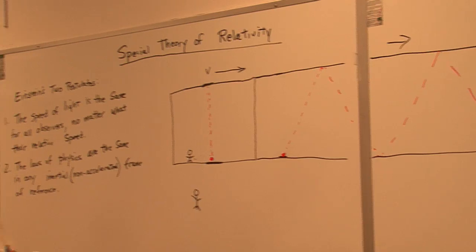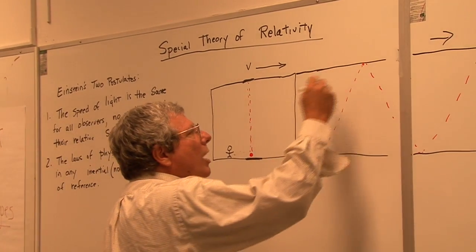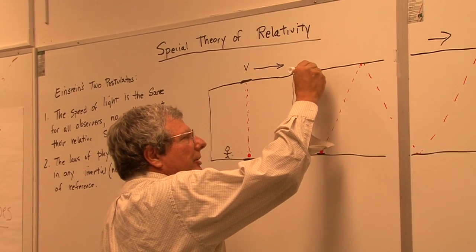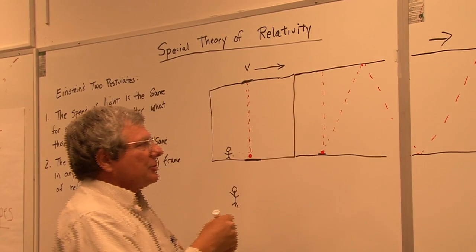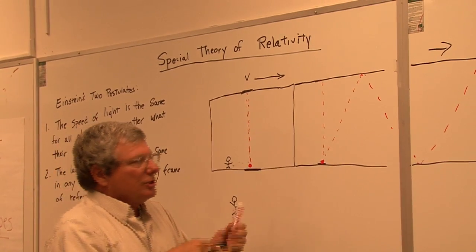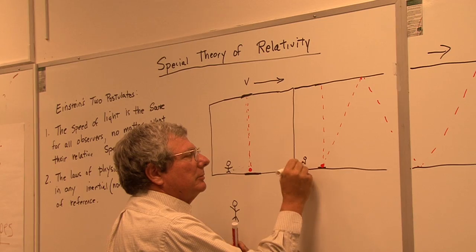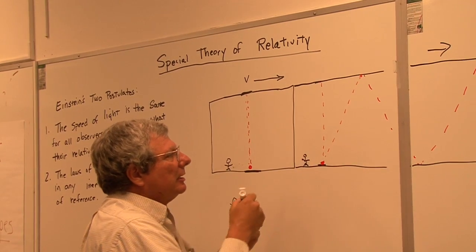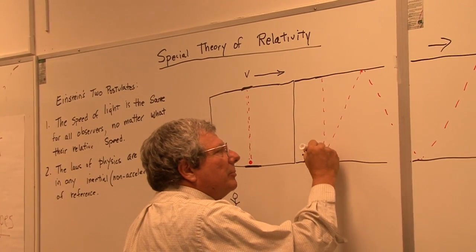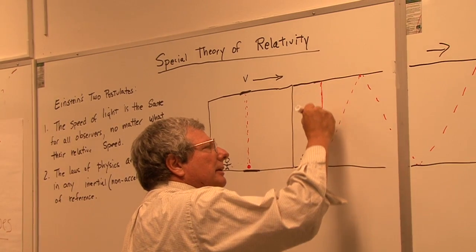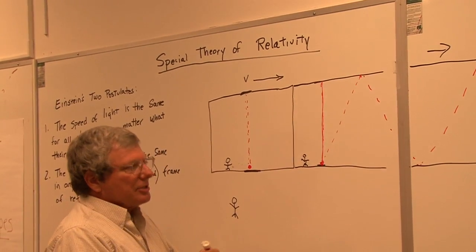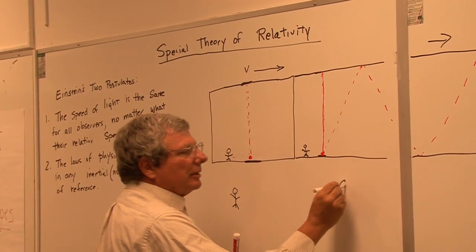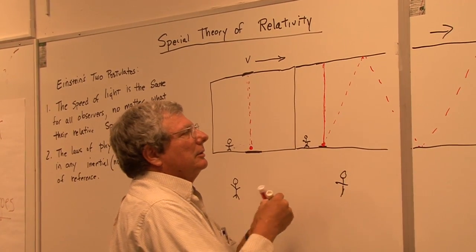We're going to look at one of these triangles here. This guy is seeing the beam of light going like this, the observer inside the spaceship. He's seeing the light just go up like this, and then back down. This person on the outside has seen the beam of light going in a diagonal.